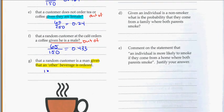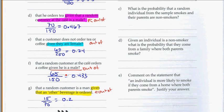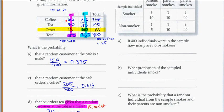So here, 15 out of 75. And that is going to be equal to 0.2. So with these ones, don't forget your givens. That's always going to be the out of, or the bottom part of your fraction, once you figure out which part of the table that is. And then you just look for the ones out of there. So again, given that they ordered something other, that they're a male. So 15 out of 75.